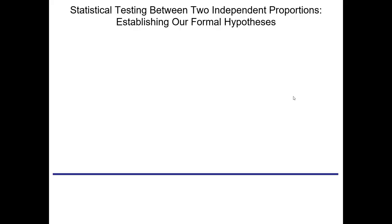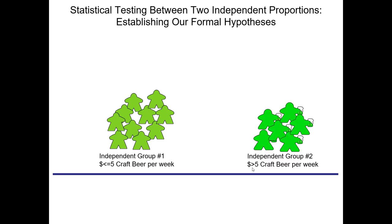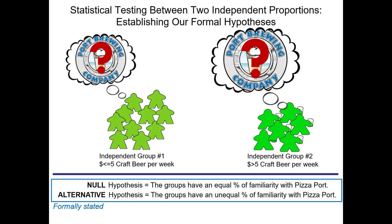I want to test two percentages, so let's formalize this into a proper hypothesis. We have independent group one — those who spend less than or equal to five dollars on craft beer per week — and independent group two — those who spend greater than five dollars per week. We want to compare the percentage in each group that are aware of Pizza Port. The null hypothesis is that the groups have an equal percent of familiarity, and the alternative hypothesis is that the groups have an unequal percentage of familiarity with Pizza Port.